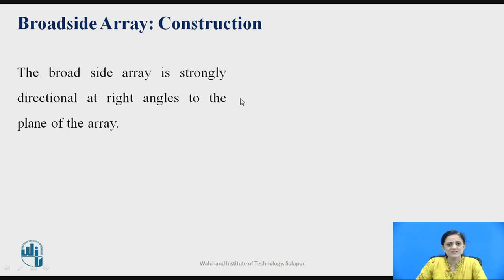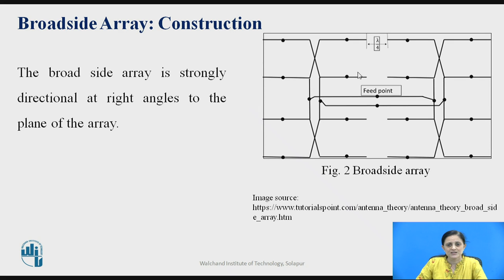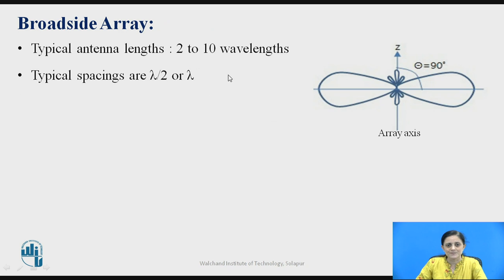The broadside array is strongly directional at right angles to the plane of an array. If these two elements are spaced with spacing lambda by 4 and the feeding point is provided at the center point, this is the example of a two-element broadside array antenna.